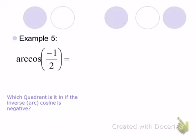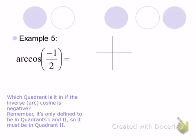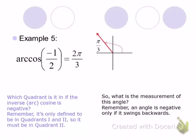Arc cosine of negative 1/2 — same as the inverse cosine of negative 1/2. We're looking for the angle or arc that has a cosine value of negative 1/2. The 1/2 tells us the reference angle is pi over 3, but we have to put it in the second quadrant because cosine is negative. The cosine is negative in the second quadrant, so putting pi over 3 in the second quadrant gives us 2 pi over 3, or 120 degrees.